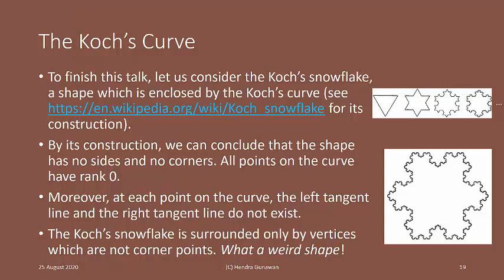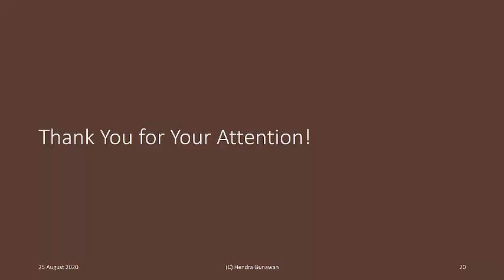Moreover, at each point on the curve, the left tangent line and the right tangent line do not exist. The Koch snowflake is surrounded only by vertices, which are not corner points. What a weird shape. Thank you for your attention.